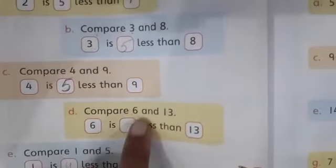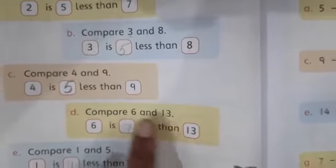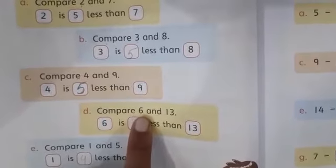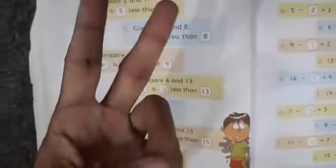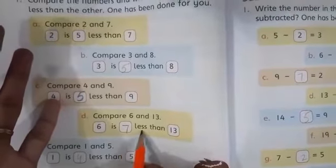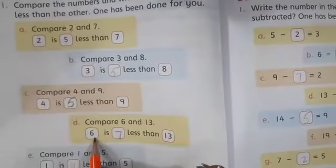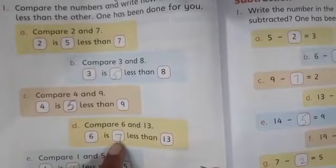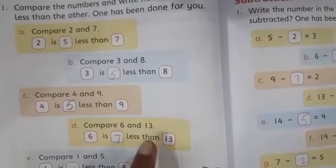Compare 6 and 13. Compare 6 and 13. Count: 7, 8, 9, 10, 11, 12, 13. So 6 is 7 less than 13. 6 is 7 less than 13.